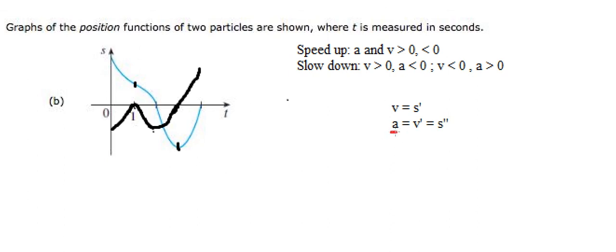Now we will go to A. The acceleration function will be based on the velocity function here. In the velocity, they're going up, so A should be positive — like this. Because velocity is going down at this point, A should be negative. From the critical point of velocity at number two, they go up, so the acceleration goes up to positive at number two. Because velocity goes up from number two to number four, acceleration will go up like this.